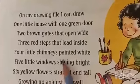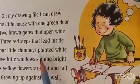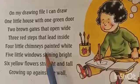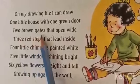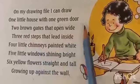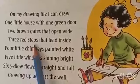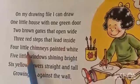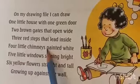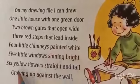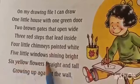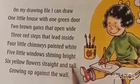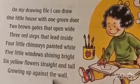This is the description of a house. One little house — you will draw one little house with one green door. It will have two brown gates that open wide, and there will be three red steps that lead inside, and there will be four little chimneys at the top of the house painted white, and there will be five little windows shining bright, and six yellow flowers straight and tall growing up against the wall.